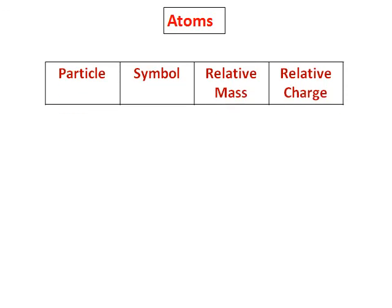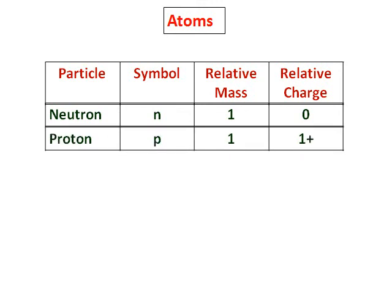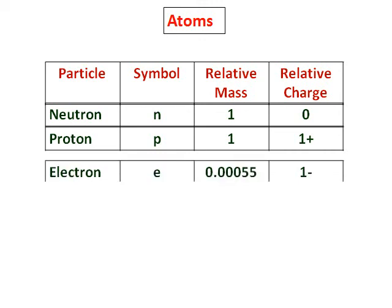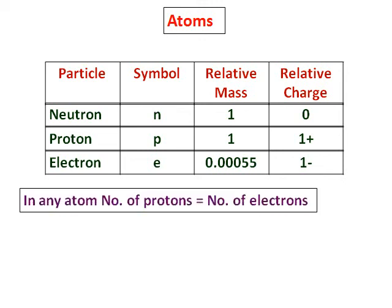The particles they have are neutron which has a symbol of n and the relative mass of 1 and the relative charge of 0. Then the protons, the symbol given is p with the relative mass of 1 and the charge of positive 1. Electrons is given the symbol e and the relative mass I have written it as 0.0055 but generally we even take it as 0 and we say that the electrons do not contribute anything to the mass of an atom and the charge of an electron is negative 1.